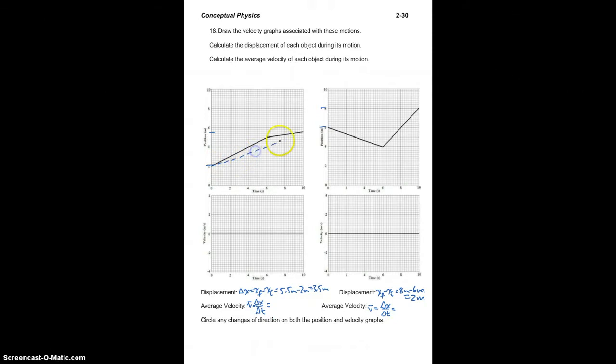Graphically, it's the slope of the line connecting the initial point and the final point, because that change in height here is the delta x and this run is the delta t. Either way, the slope of that line or the algebraic definition will get you there.